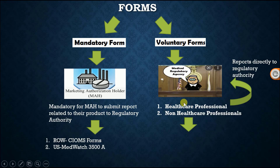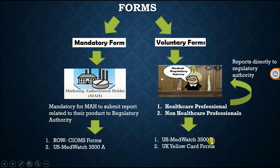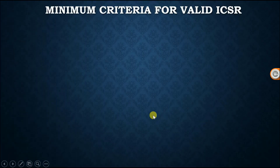Examples of voluntary forms are the US MedWatch Form 3500B — note the difference: 3500B is the voluntary form and 3500A is the mandatory form. The second voluntary form is the UK Yellow Card form.